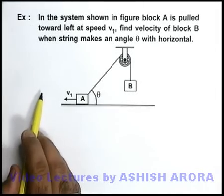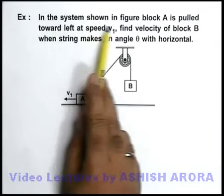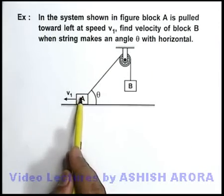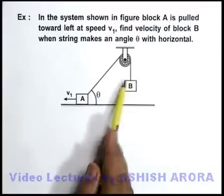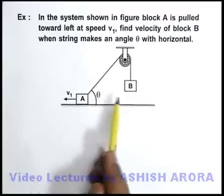Let's see another example. Here we are given that in the system shown in figure, block A is pulled toward left at a speed v1, and we are required to find the velocity of block B when the string makes an angle θ with the horizontal.